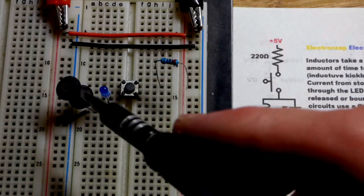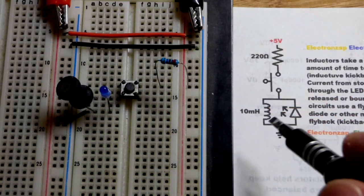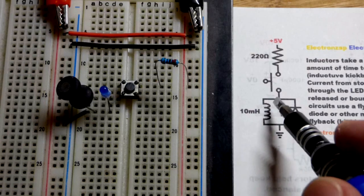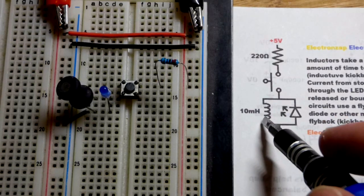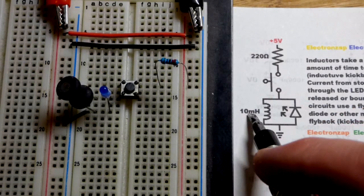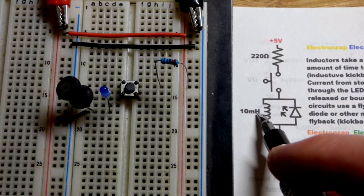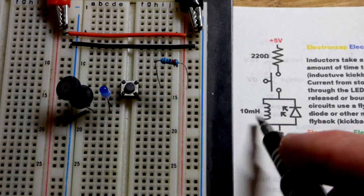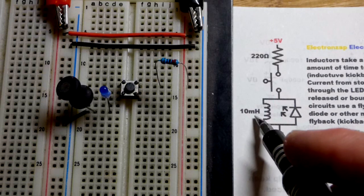It's a coil of wires. This one actually has an iron core, so the wire is wrapped around a piece of iron. Usually you see a couple bars next to it to indicate that, but I didn't add that. This is a 10 millihenry inductor. Inductance is in units of Henry.